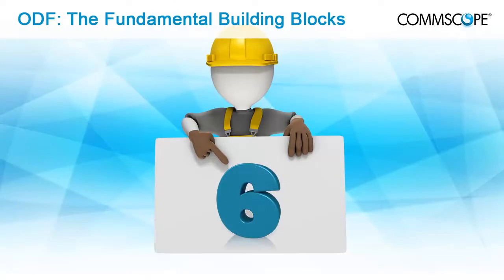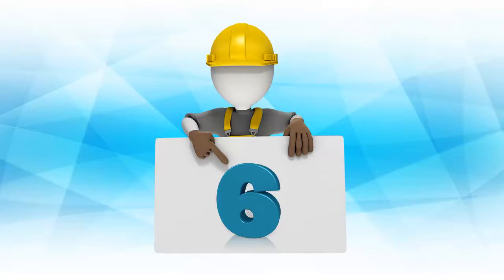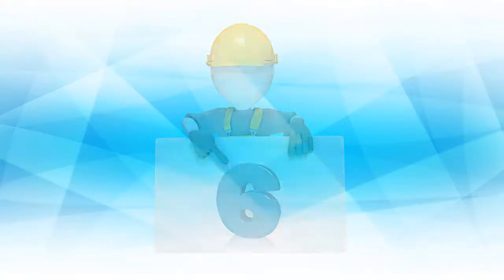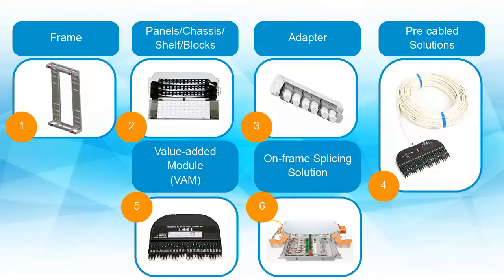Any quality ODF solution should always consist of six fundamental building blocks. If one is absent or incomplete, the customer will struggle to find a good solution. The six blocks are: 1) A specific frame solution to house connectivity blocks and offer superior cable and patch cord management. 2) A housing to facilitate the connectivity adapters — referred to variously as shelf, panel, block, chassis, or sub-rack. 3) Adapters or adapter packs. 4) Design, component, and building blocks to enable pre-fibered solutions, easy to build in the factory but also easily packed, shipped, unpacked, and installed on-site. 5) Value-added modules fitting in the same footprint as adapters to support filters, splitters, and monitoring devices. 6) On-frame splicing solutions, as not all customers do off-frame splicing.